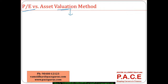The asset valuation mechanism is purely the balance sheet based mechanism, the financial statements based mechanism, where we are simply looking at those assets that are present in the balance sheet — those assets that are measurable. There are a few assets that get automatically omitted from this list.